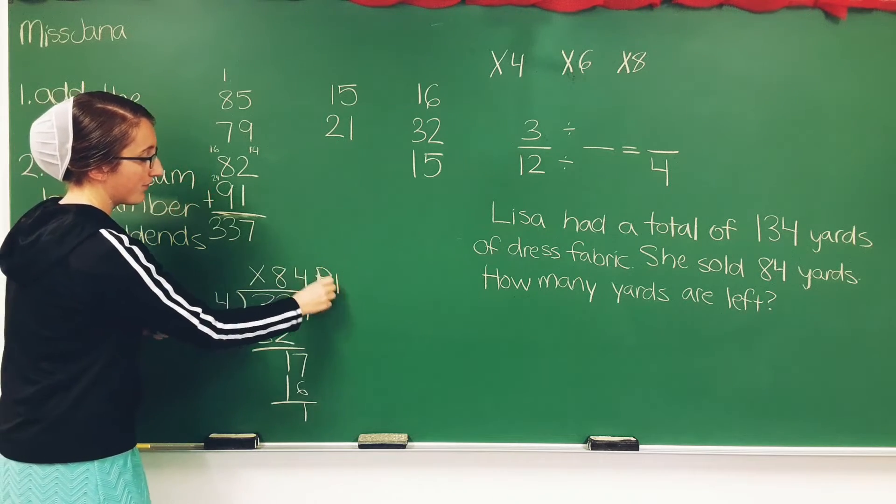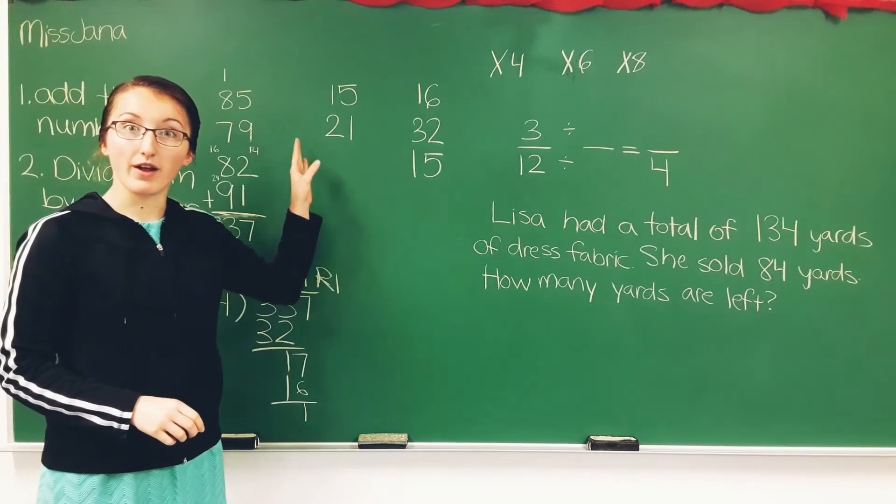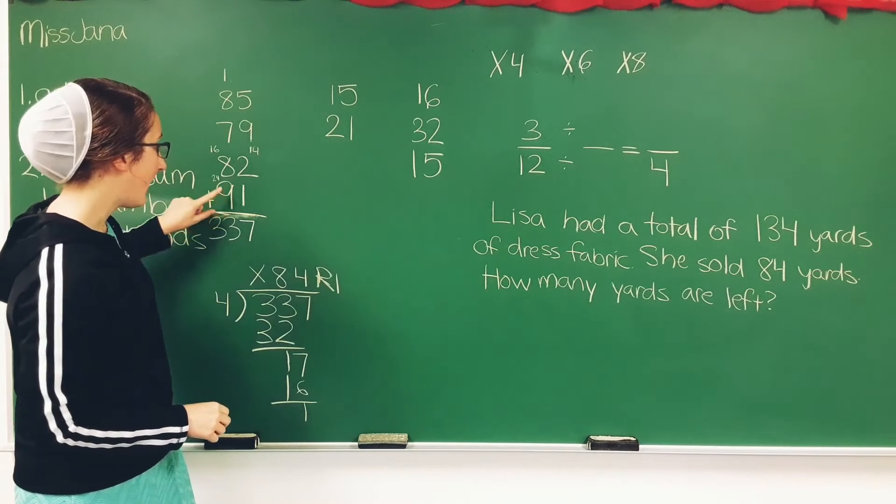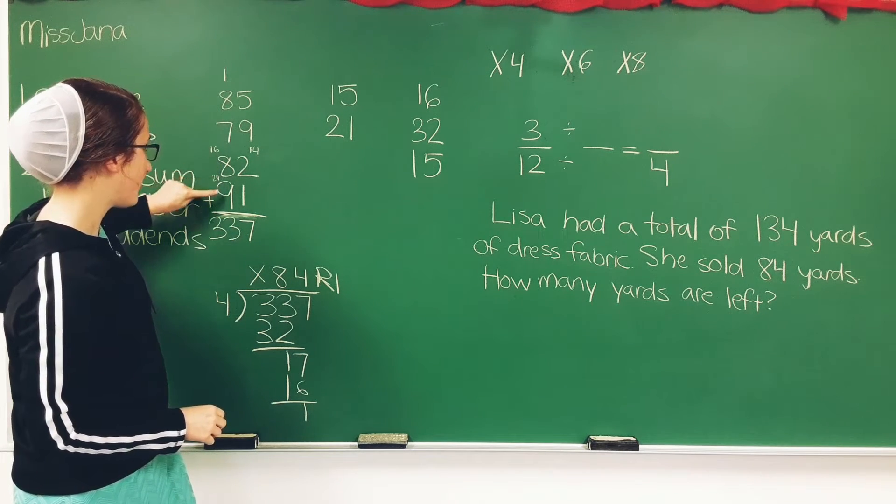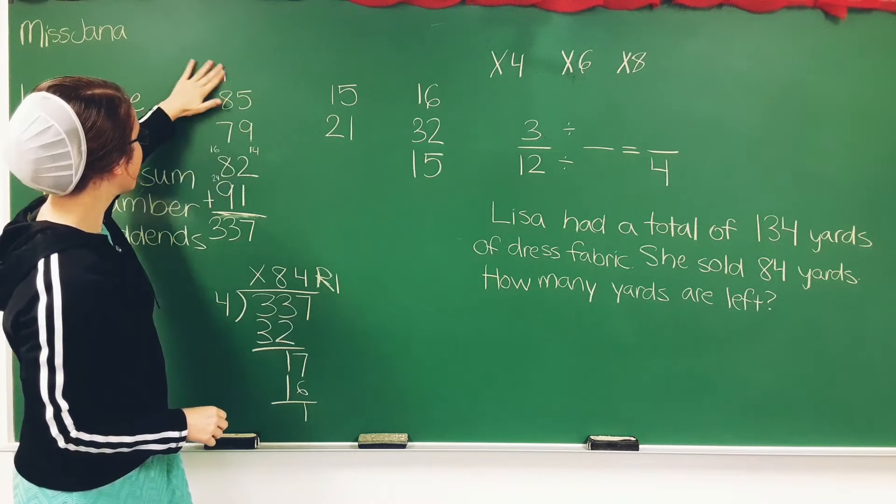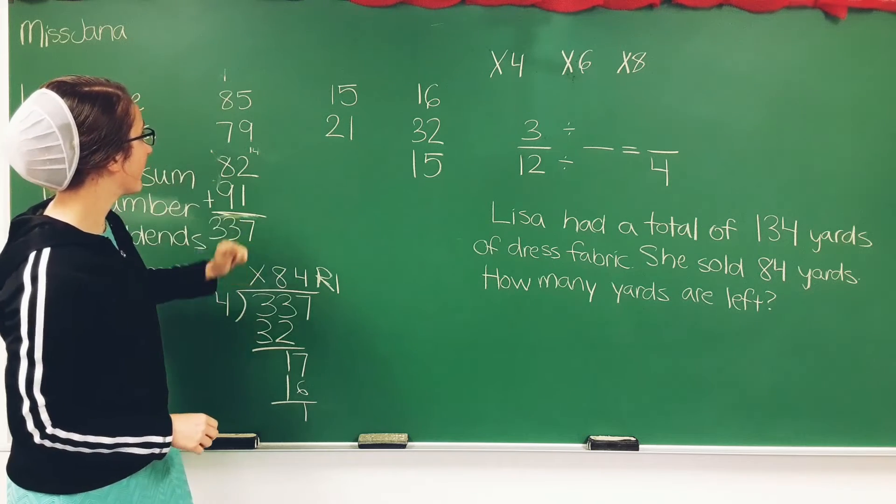But the average number, the average for these numbers is 84. 84 is the average from these 4 numbers.